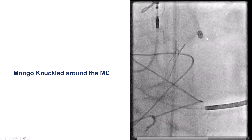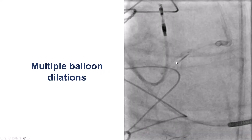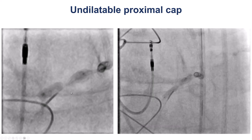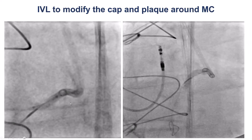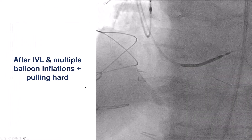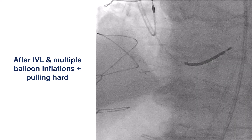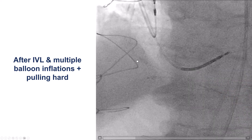We took another polymer jacket Mongo wire, knuckled it around the entrapped microcatheter, and performed multiple balloon dilatations, but there remained a waist in the balloon suggesting heavy calcification. The imaging showed severe calcification, which may have played a role, although the catheter tip appeared slightly more distal to the calcified segment. We then performed intravascular lithotripsy to modify the cap and plaque. Pulling back was very challenging, but eventually after quite some time and multiple attempts, we were able to pull the retrograde microcatheter along with the retrograde wire out.